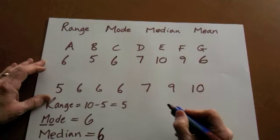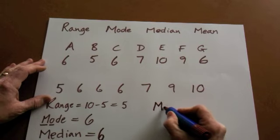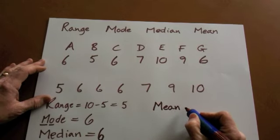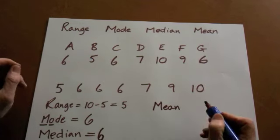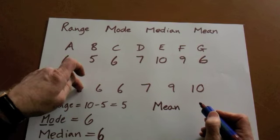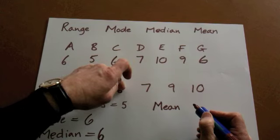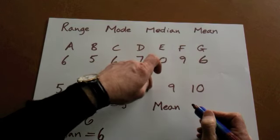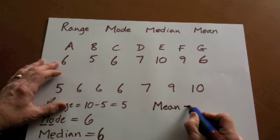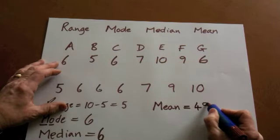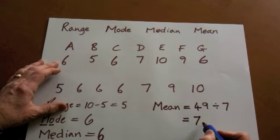And the mean. The mean is the meanest one to do. It's the hardest one to do. To find the mean, we have to add up all the numbers, then divide by the number of people. So if we add these up: five add six is eleven, add six is seventeen, add six is twenty-three, thirty, thirty-nine, forty-nine. So the mean is forty-nine divided by seven. So the mean is seven.